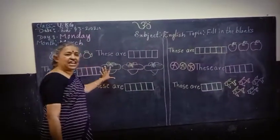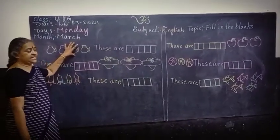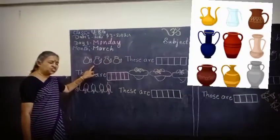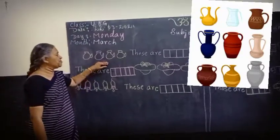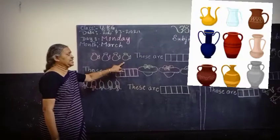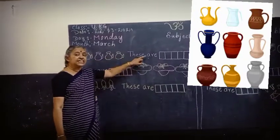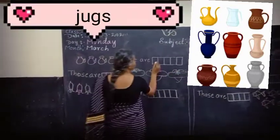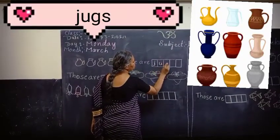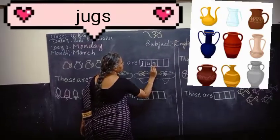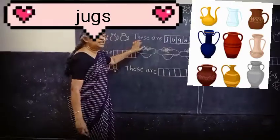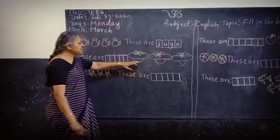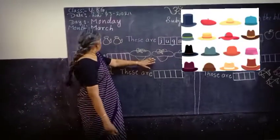Now let us move on to the blackboard. We can learn some words. See the first picture — these are Jugs. I have even four Jugs here. So we have to use 'These are Jugs.' Write the spelling of Jugs — small J-U-G-S, Jugs.